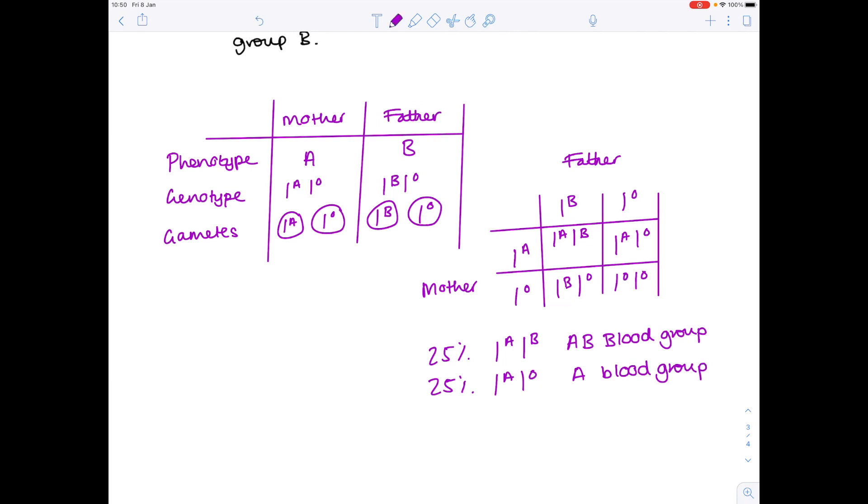This offspring is very similar but it's this time the B blood group. And then finally this offspring is an O blood group. And I've pointed out all my genotypes and how they link with my phenotypes. So one to one to one to one is your ratio.